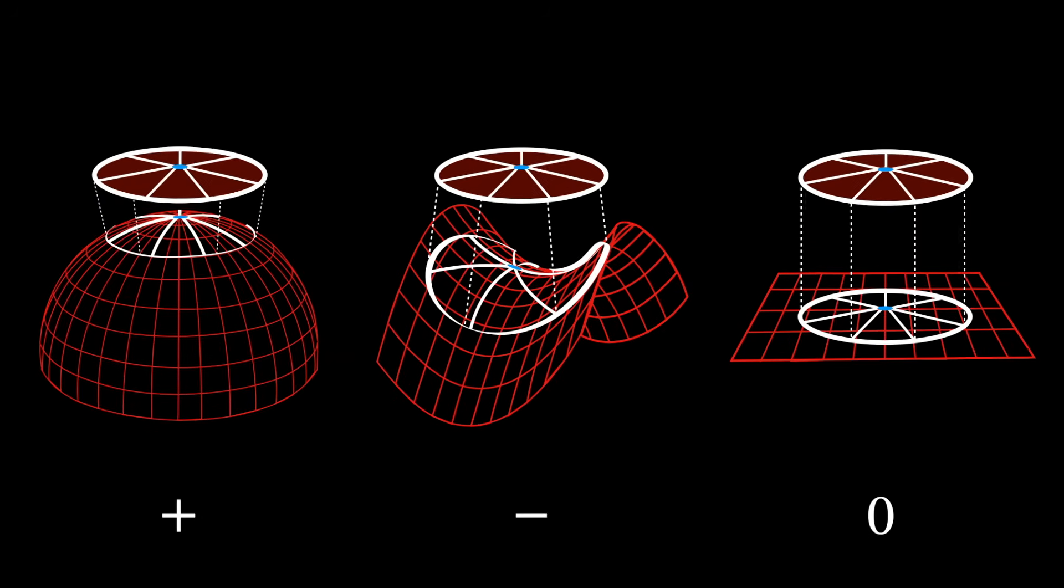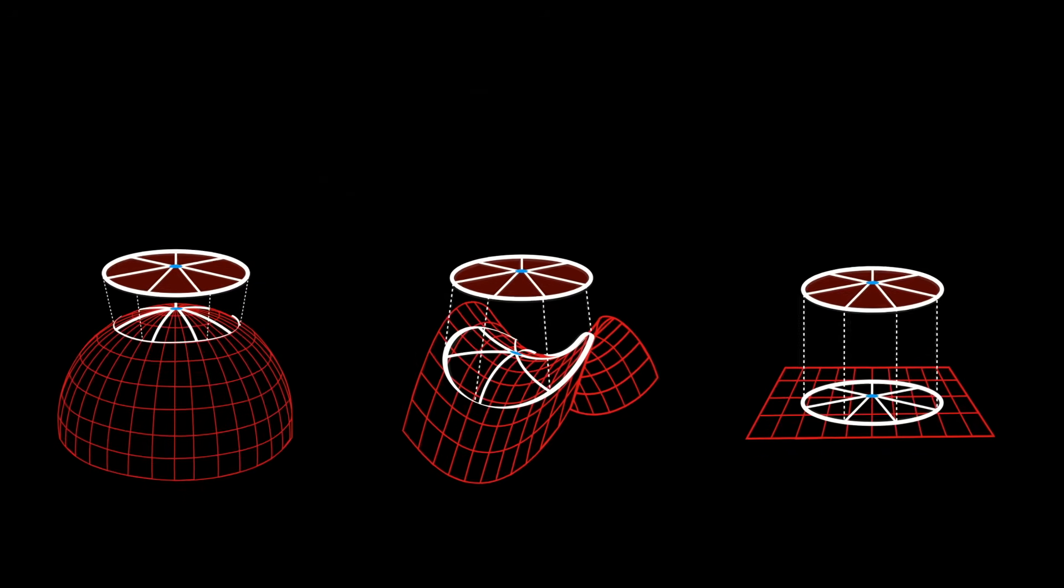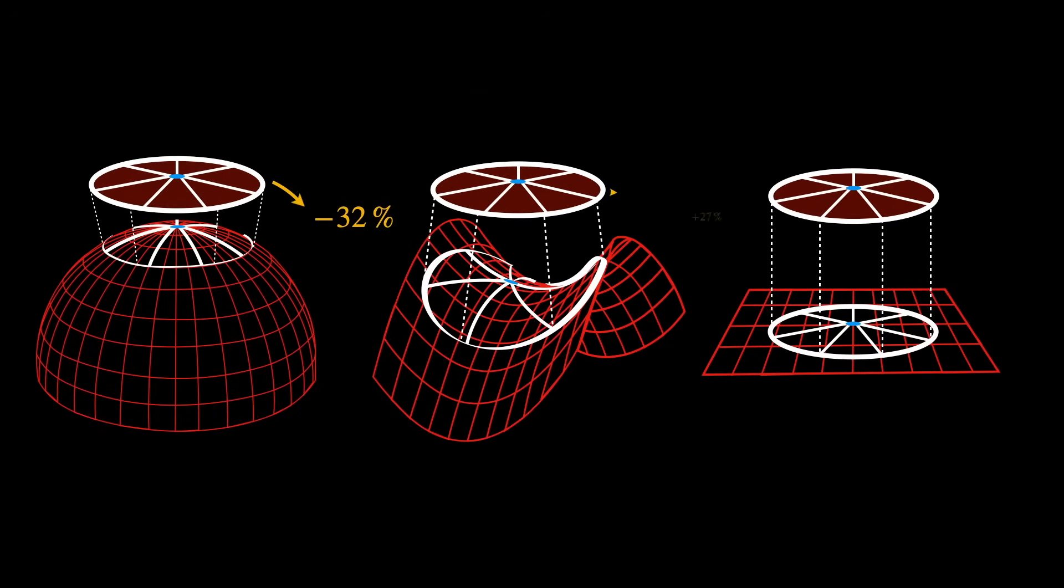That's where scalar curvature comes in. It's denoted with the capital letter R, and it is a way of capturing how much a space around a point is curving. You can also think of it as the average amount by which circles drawn around that point shrink or expand compared to its flat version.